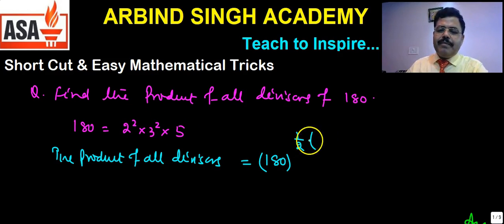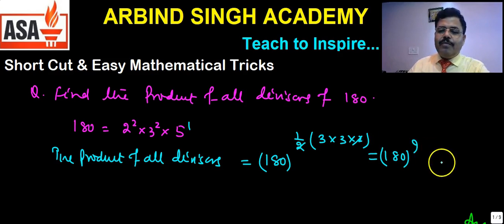And number of divisors can be obtained as increase this power by 1 and multiply themselves. That is 2 will be 3, 2 will be 3, and 1 will be 2. So this will be 2, 2 cancels, 3, 3, 9. So 180 to the power 9 will be product of all divisors.